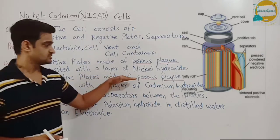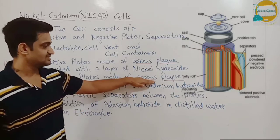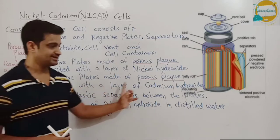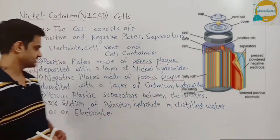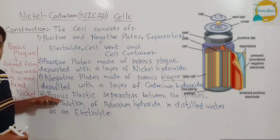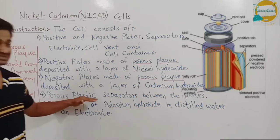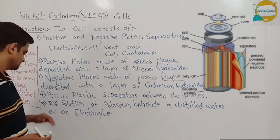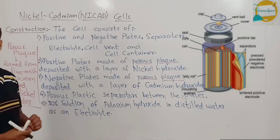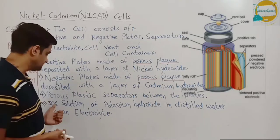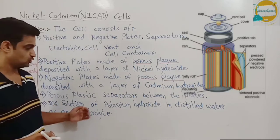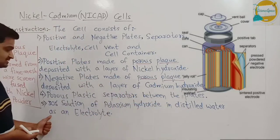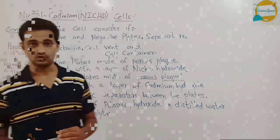And then there are negative plates which are another electrodes and which are again made up of porous plate but it is then deposited with a layer of cadmium hydroxide. And then the next part is porous plastic separators which are placed between the plates, that is the electrodes, and the last part is the electrolyte. Electrolyte is a 30% concentrated solution of potassium hydroxide mixed into distilled water which acts as an electrolyte.